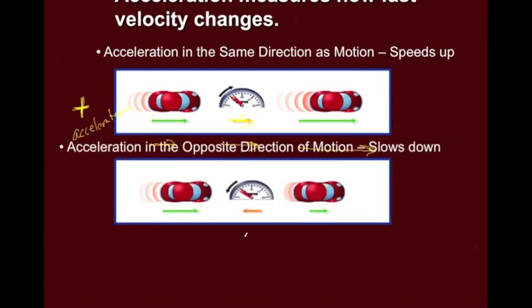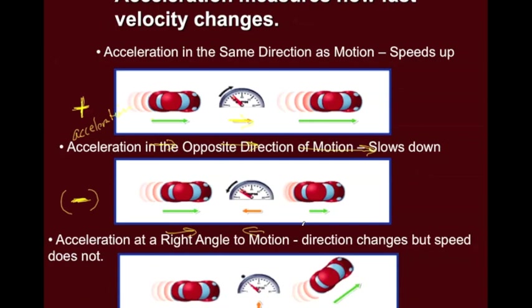Acceleration in the opposite direction causes negative, which is known as negative acceleration, causes the object to slow down. And here you have acceleration at a right angle. So if it pushes on the object from one side, it's going to move to the opposite side.